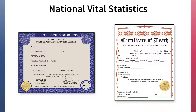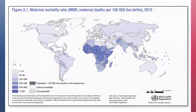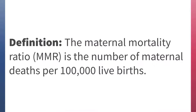However, many countries do not have comprehensive vital statistics systems, so they use household surveys like DHS to estimate maternal mortality and the maternal mortality ratio. The maternal mortality ratio, or MMR, is the number of maternal deaths per 100,000 live births.